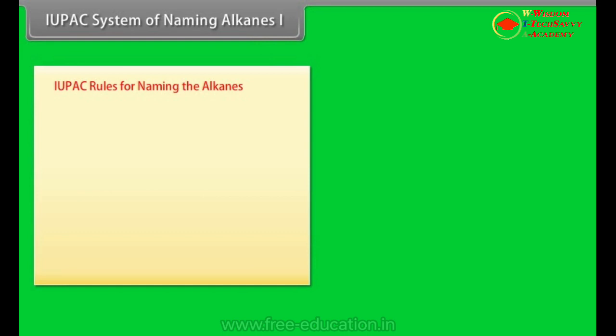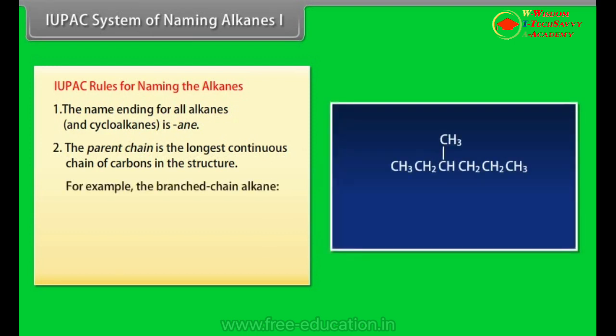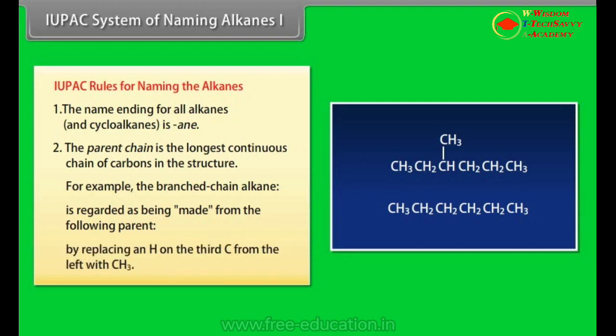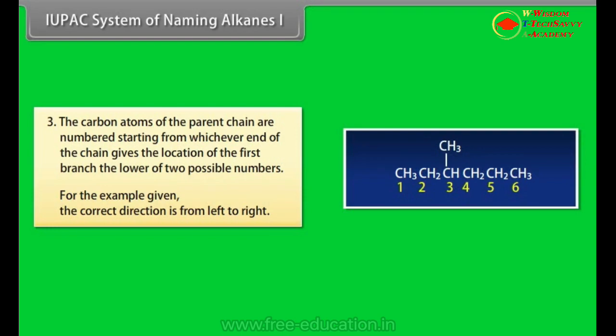IUPAC rules for naming the alkanes. Number 1: The name ending for all alkanes and cycloalkanes is -ane. Number 2: The parent chain is longest continuous chain of carbons in the structure. For example, the branched chain alkane is regarded as being made from the parent chain by replacing an H on the third C from left with CH3. Number 3: The carbon atoms of the parent chain are numbered starting from whichever end of the chain gives the location of the first branch the lower of two possible numbers. For the example given, the correct direction is from left to right.